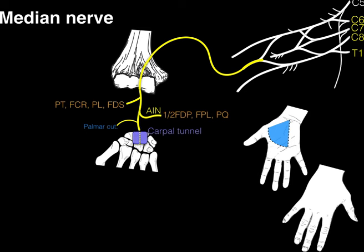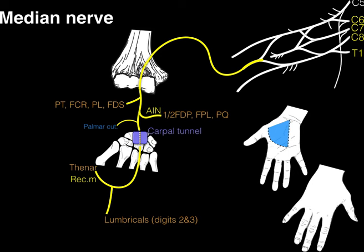After traversing the carpal tunnel, the median nerve gives rise to a recurrent median branch that innervates the three thenar muscles, and continues on to give innervation to the lumbricals going to digits two and three — the first and second lumbricals — which act on the index finger and middle finger. It also gives rise to digital cutaneous branches producing the cutaneous distribution of the hand. That covers what you need to know about the median nerve.